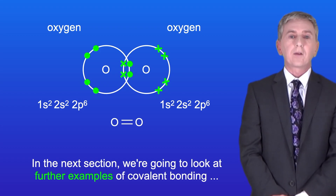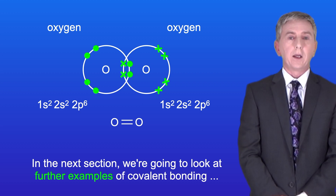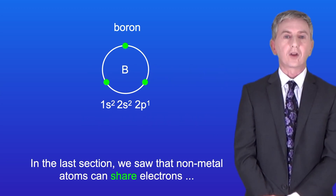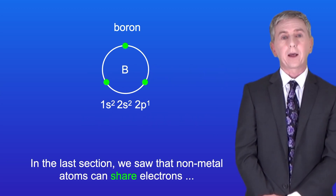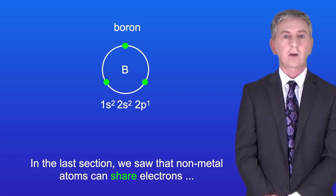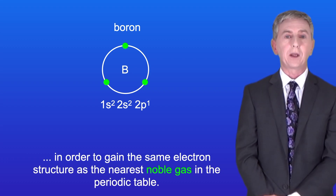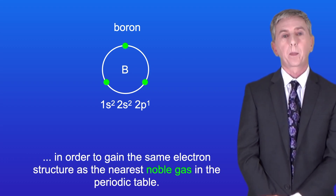In the next section we're going to look at further examples of covalent bonding including expansion of the octet. In the last section we saw that non-metal atoms can share electrons in order to gain the same electron structure as the nearest noble gas in the periodic table.